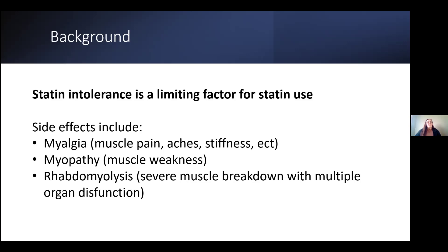Rhabdomyolysis is the severe muscle breakdown with renal dysfunction or acute kidney injury. This is characterized clinically by a triad of myalgias, muscle weakness, and a red to brown urine called myoglobinuria. Biochemically, several serum muscle enzymes are elevated, including creatinine kinase, but the degree of muscle pain and other symptoms can vary widely.